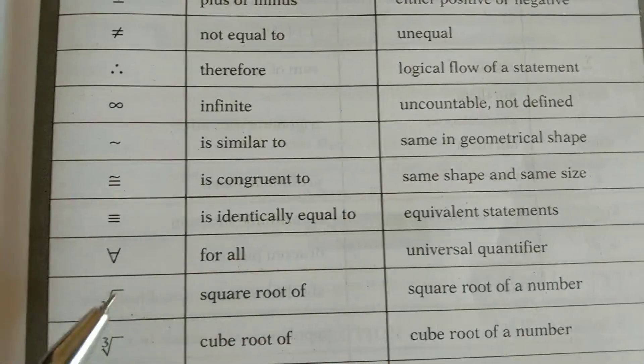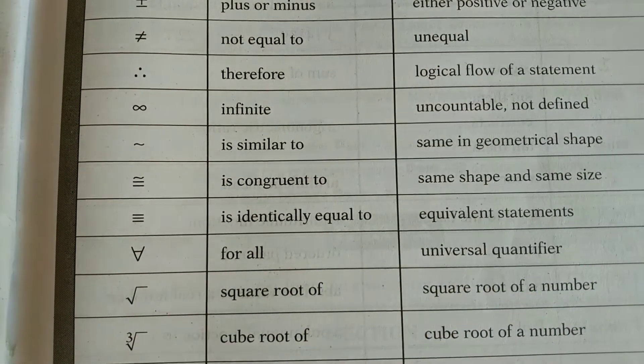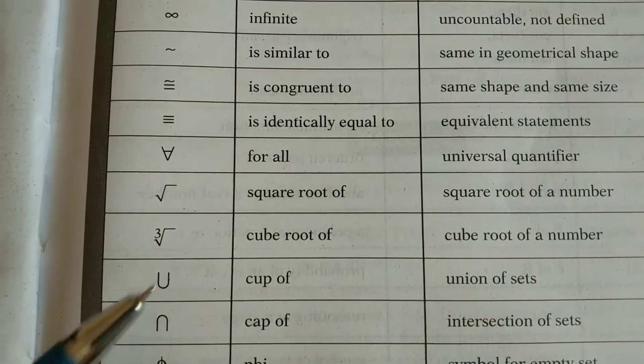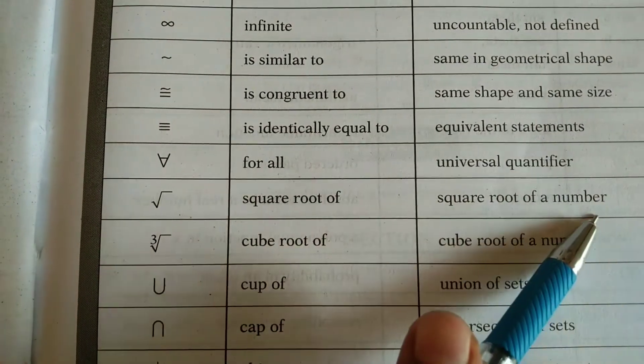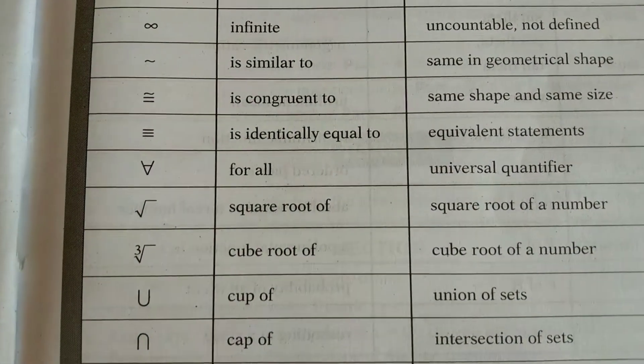Next one, for all, that is universal quantifier. Next, the symbol is square root of, square root of a number. This is cube root of, cube root of a number.